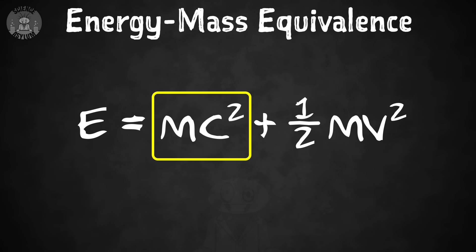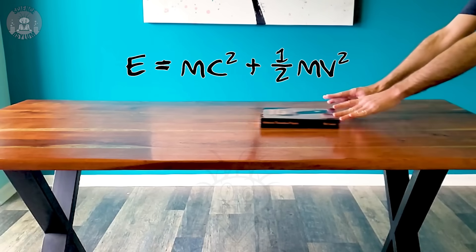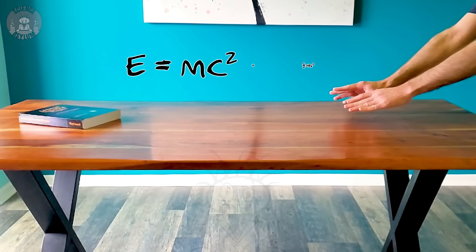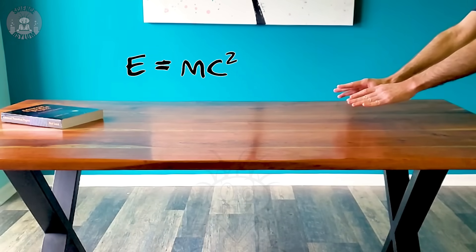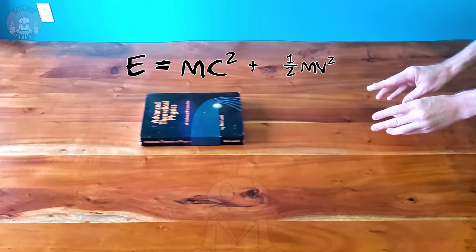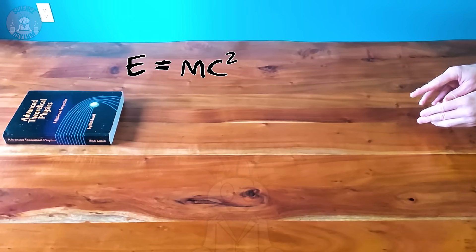And a new term, which he interpreted as rest energy — the word rest meaning stationary. If you've got a book sliding across the table, it has kinetic energy, but it will eventually stop. What Einstein's energy relation tells us is that the book still has energy even though it's not moving. It has an amount of rest energy equal to mc squared. So E equals mc squared doesn't tell us that mass can be converted into energy — it tells us that mass is energy.